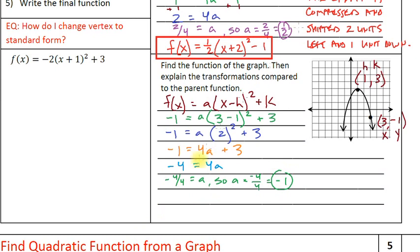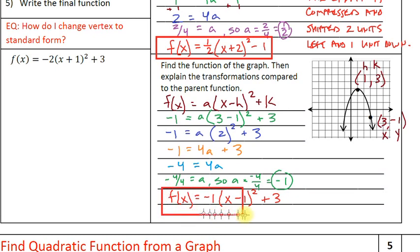Our a value is negative 1, so our function is f(x) = −1(x − 1)² + 3. We leave x as a variable, h was positive 1 so it becomes negative 1 in the equation, and k is positive 3. Do this a couple of times and you'll see it's not as bad as it seems.